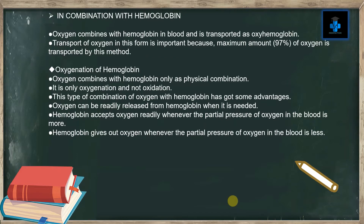Transport of oxygen in this form is important because the maximum amount — 97% of oxygen — is transported in this method. Oxygenation of hemoglobin is only a physical combination; it is oxygenation and not oxidation. This has advantages: oxygen can be readily released from hemoglobin when needed. Hemoglobin accepts oxygen when the partial pressure of oxygen in the blood is high, and gives out oxygen when the partial pressure is low.